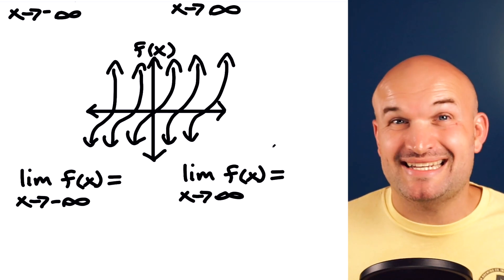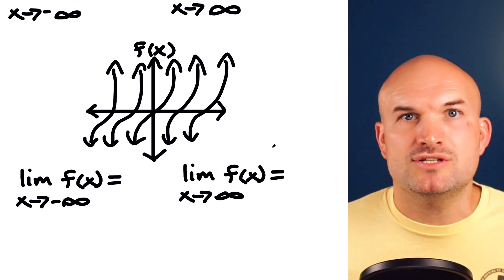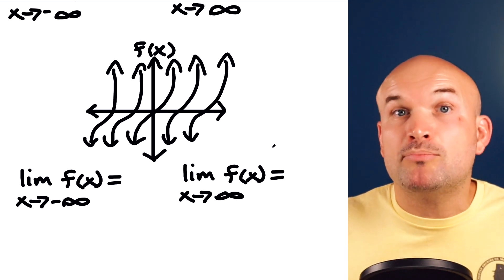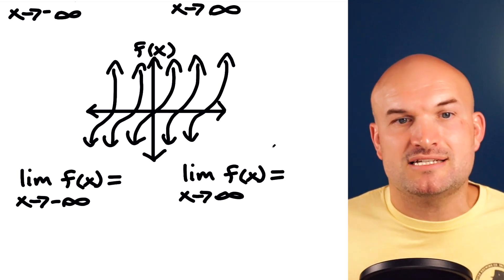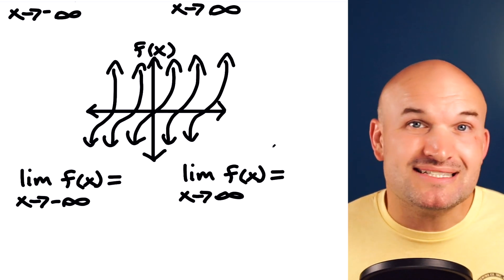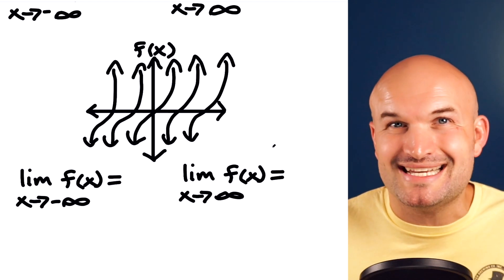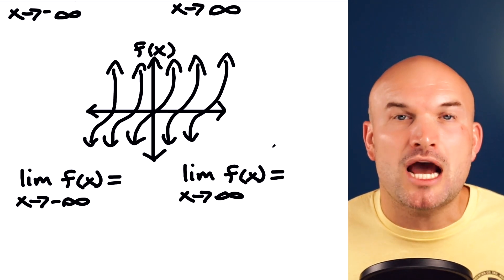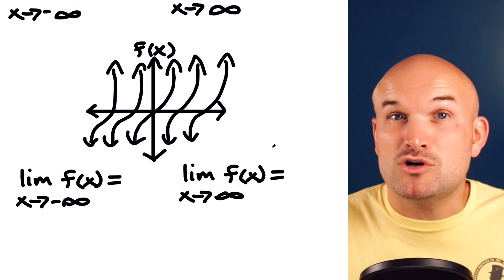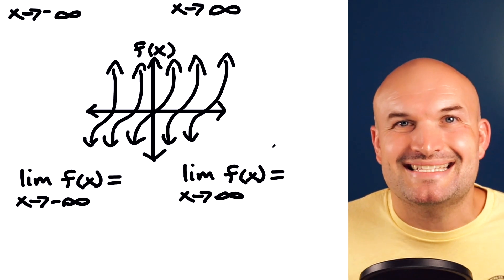This last example is a fancy case included because it goes with our understanding of end behavior. When we look at end behavior, we look at where the graph is approaching as it expands. This looks like a tangent graph, and tangent graphs keep repeating themselves. If a graph is continuously repeating, it's never actually approaching anything. So the limit as x approaches both negative and positive infinity does not exist.